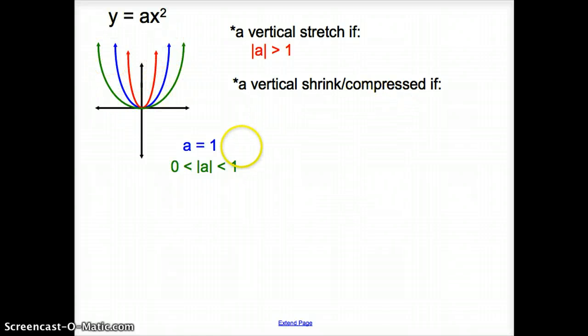Now, we would have a vertical shrink or compression if my a was between 0 and 1. The absolute value of a being between 0 and 1. So it could be a decimal. It would be a fraction or a fraction smaller than 1. It would be 1 half or it would be 0.5, 0.25.